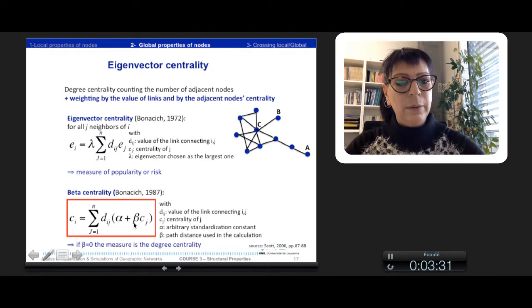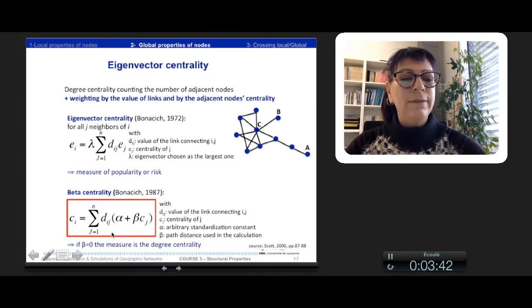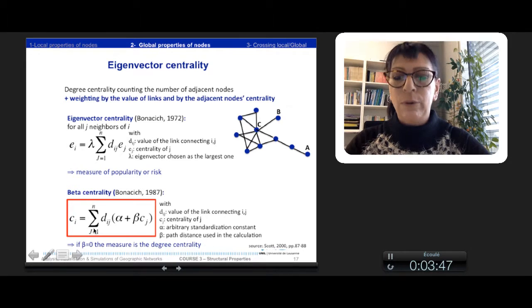And then 2 paths, or 3, until the full diameter of the network. This index of beta centrality is very interesting because it is defined locally, but its value takes into account the whole graph.